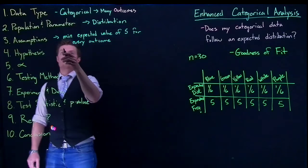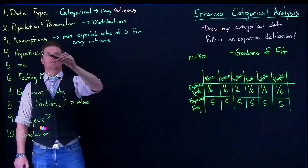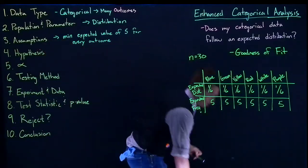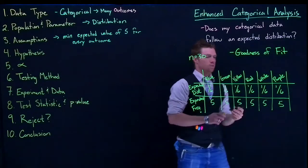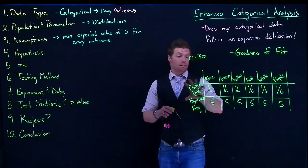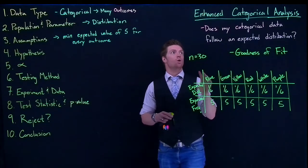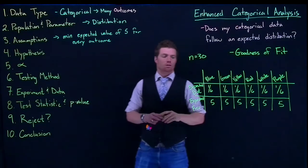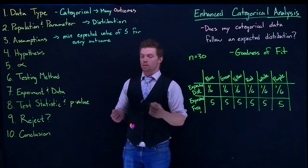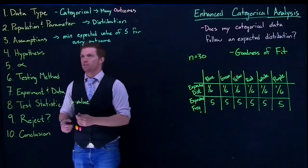All right, so would I, in fact, meet my assumption that the minimum expected value of five for every outcome? Here are all of my possible outcomes, and they, in fact, all are five. So I'm okay to be able to go ahead and do my goodness of fit because my expected value has a minimum of five. Excellent. So now I'm ready to set up my hypotheses.